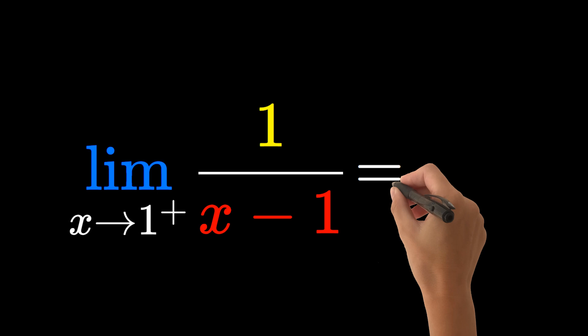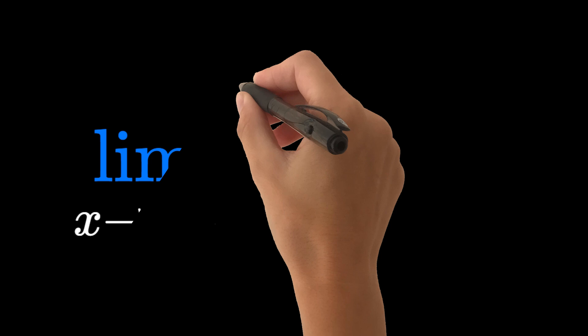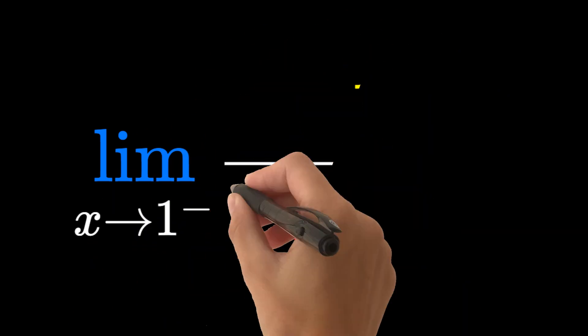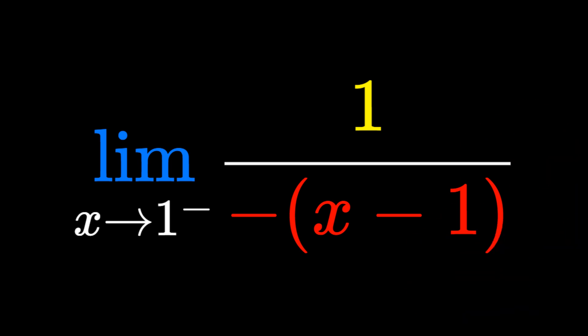To find the limit when x is less than 1, we write the limit as x approaches 1 from the left of 1 over the negative of the quantity (x - 1). There are no more absolute value bars, but we've added a negative to the expression x minus 1.